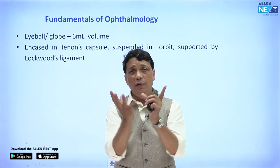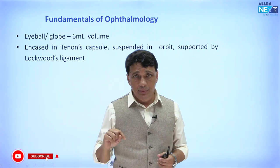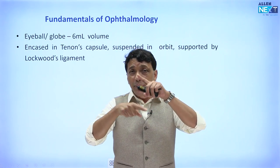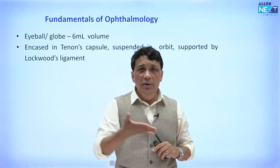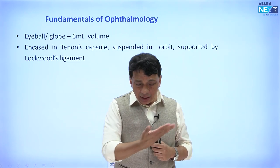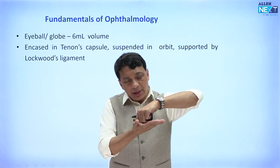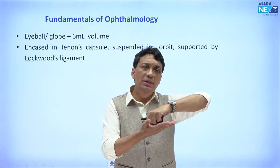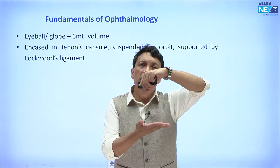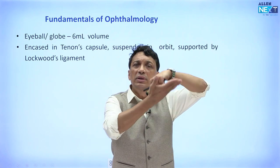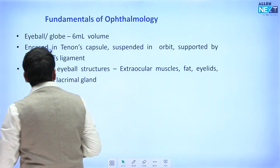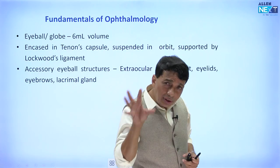The eyeball is encased in a wrapping known as Tenon's capsule. This eyeball, wrapped in Tenon's capsule, is suspended from Lockwood's ligament — like a hammock. The eyeball rests on this hammock; it is actually closer to the roof of the orbit rather than the floor, and Lockwood's ligament provides stability in the vertical plane.